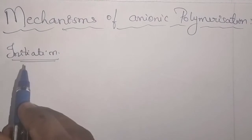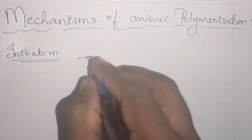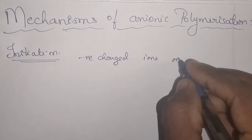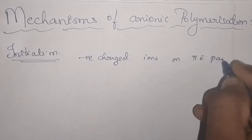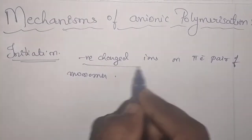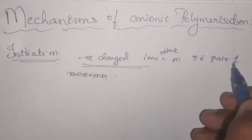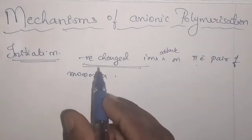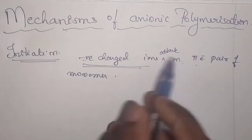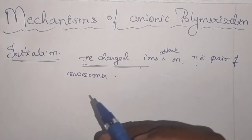Now we will see what is initiation. Initiation will be done by the negatively charged ions on the pi electron pair of the monomer. The negatively charged ion will attack on the pi electron pair of the monomer, and as a result, whenever this species attacks the monomer, the negative charge will shift to the monomer side. That is why it is called as anionic polymerization process.